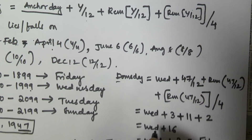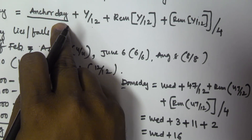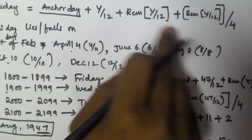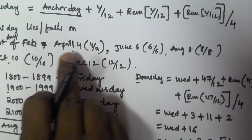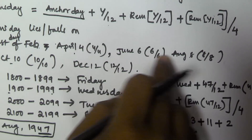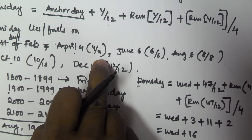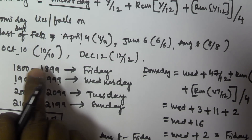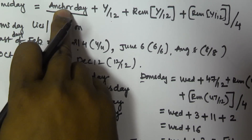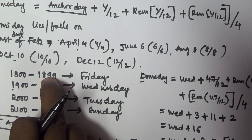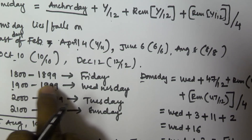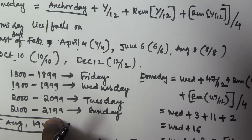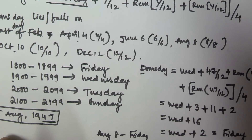So the formula is: Doomsday equals Anchor Day plus year by 12, plus remainder of year by 12, plus remainder of year by 12 divided by 4. The Doomsday falls on last day of February, April 4th, June 6th, August 8th, October 10th, December 12th. Anchor Days: 1800–1899 is Friday, 1900–1999 is Wednesday, 2000–2099 is Tuesday, 2100–2199 is Sunday.